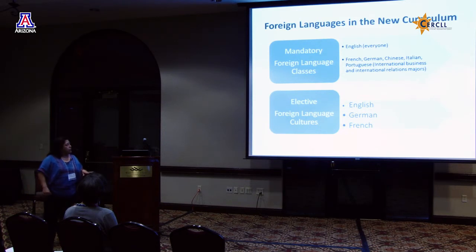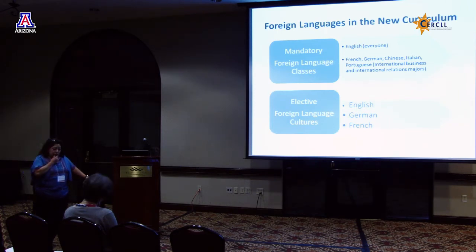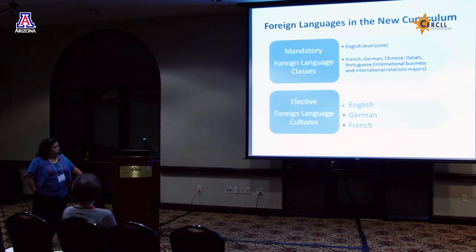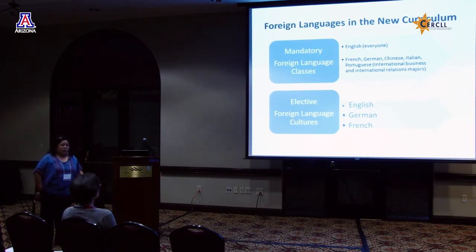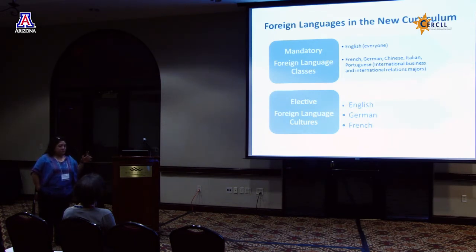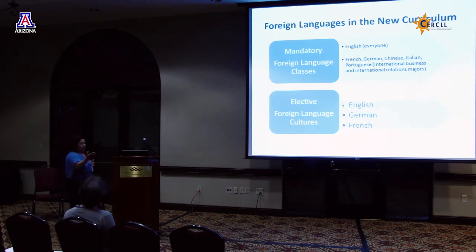What was decided: we would have mandatory foreign language classes — English for everybody. In order to graduate, they have to have a certificate for English, done through an exam linked with the British Council. For some majors like international business or international relations, they would have either French, German, Chinese, Italian, or Portuguese. The elective part was the foreign language cultures. One of the points I made was that language classes cannot be detached from culture classes, but they insisted that English classes be mandatory and culture classes — well, maybe. So it's like a step forward and then back.